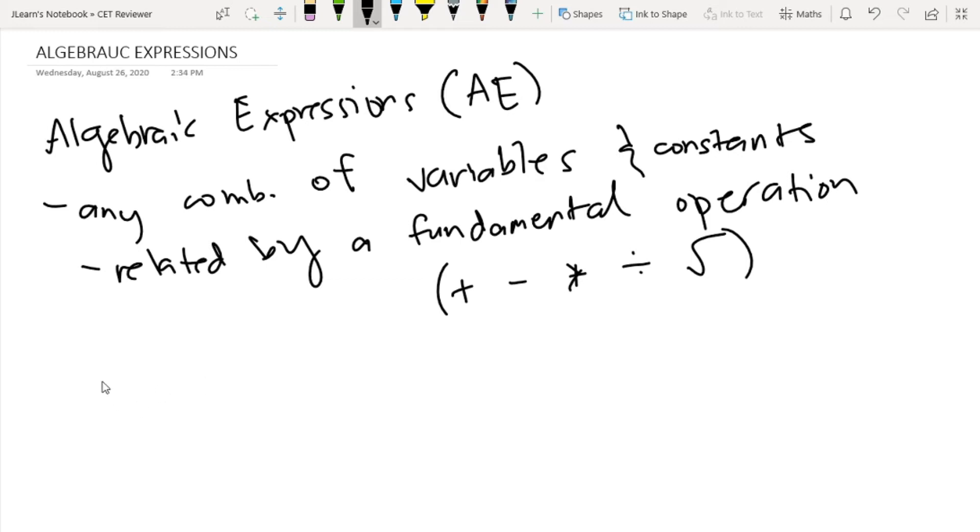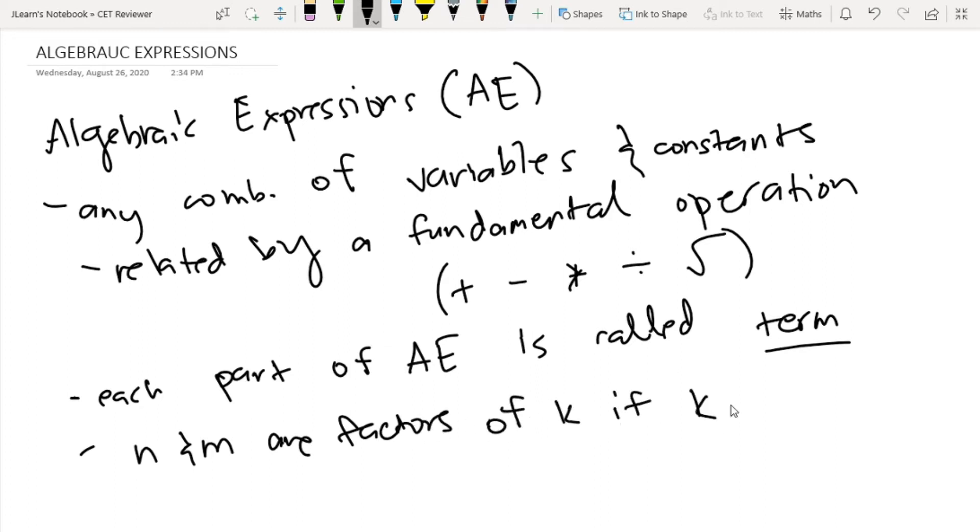So each part of an algebraic expression is called a term. So we also say na n and m are factors of k if k is equal to n times m. And then we call each factor in a term a coefficient.